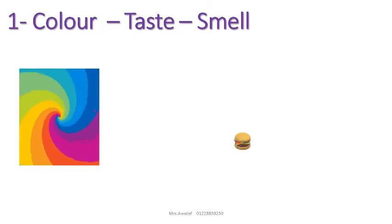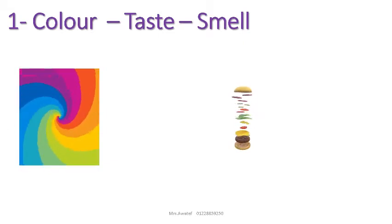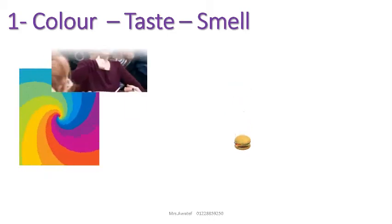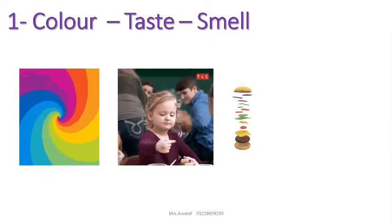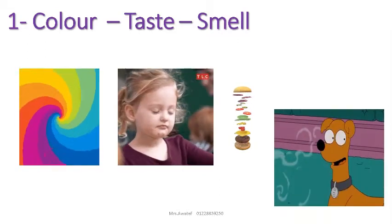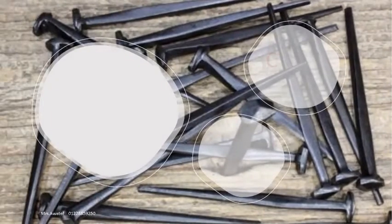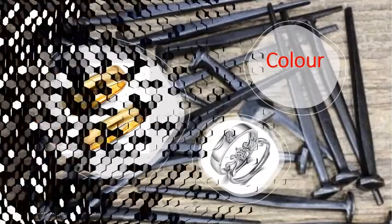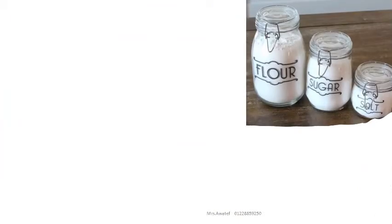We can distinguish some properties of a matter by its color, its taste, or its smell. Gold is yellow in color. Silver is silvery in color, while iron nails are black or brown. But look — flour, sugar, and salt all have a white color, so we cannot distinguish them by color alone.